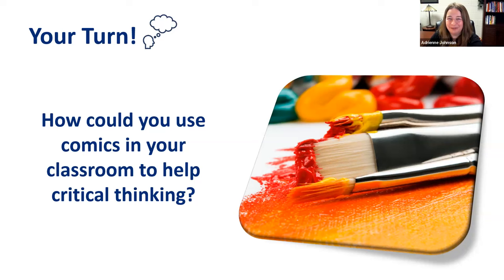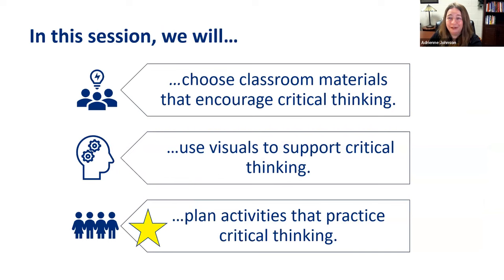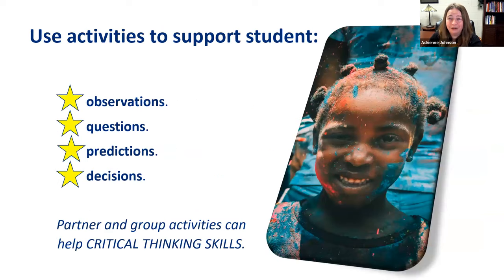Those are some great ideas. I know in my own classroom I used to use comics for listening comprehension — students can listen to a story and then draw what they're hearing. We've talked so far about how to choose materials and use visuals. Next, we're going to practice a couple of activities to help students practice critical thinking. We want young learners to make observations, ask questions, make predictions, and make decisions. Having students work collaboratively in partners or groups can help develop those critical thinking skills.